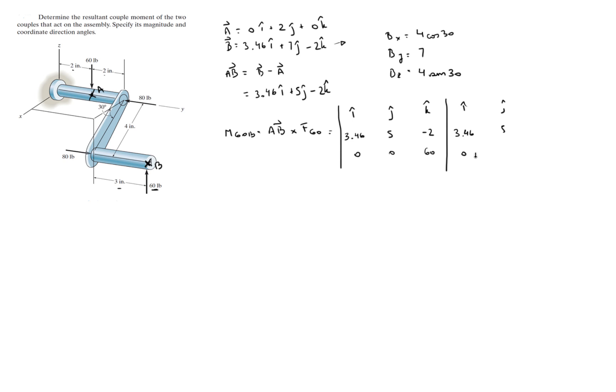So now we solve this matrix. We rewrite the first and second column, 3.46, 5, and this is 0, 0. And then we multiply the positive diagonals plus plus plus, which gives you 5 times 60, which is 300i. Then you get 0 and 0, and these are the positive diagonals. And then the negative diagonals negative negative negative, which are these. 0, 0, and 60 times 3.46 times J, which comes out to be positive 207.6 times the minus because it's a negative diagonal, so negative 207.6 in the J.